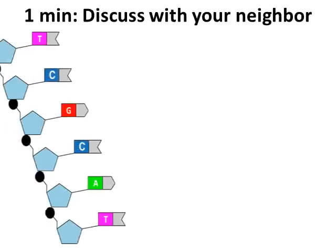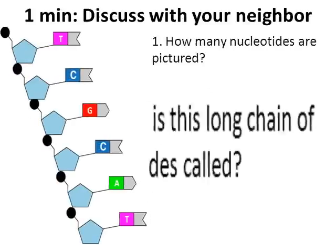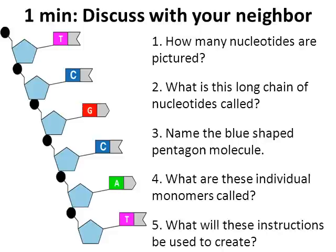If we were in class, I would give you a minute to work out these five questions with your neighbor. At home, pause the video — I'm going to go over the answers in three, two, one. Now that you've had time to pause the video: question number one, how many nucleotides are pictured? Well, if you just count the A's, T's, C's, and G's, I hope you see there are six of them.